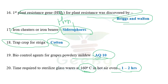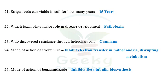The exact answer for sterilization at 160°C is 2 hours. The next question: Striga seeds can remain viable in soil for how many years? The answer is 15 years. Striga seeds, during unfavorable conditions in soil, are still viable for 15 years.